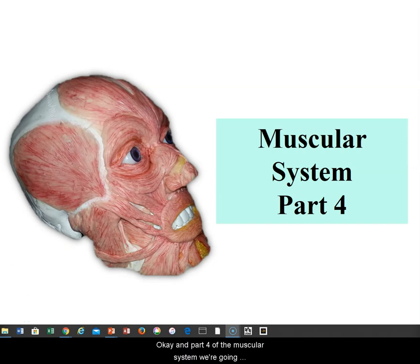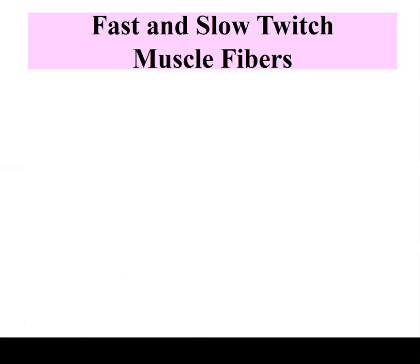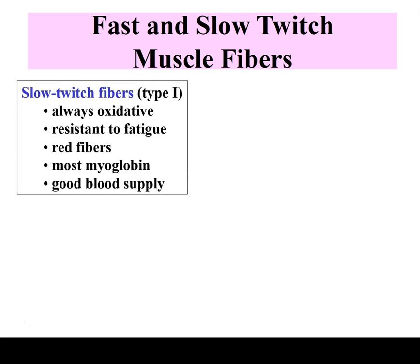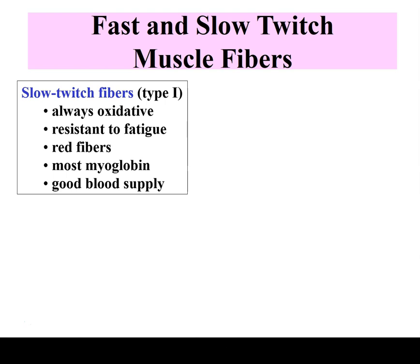In part four of the muscular system, we're going to look at different types of muscle tissue. We're going to look at fast and slow twitch muscle fibers. Slow twitch fibers are type one slow twitch — they contract slowly and are always oxidative, meaning they break down glucose with oxygen through aerobic respiration.